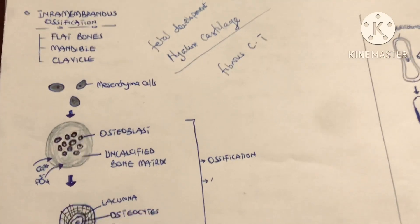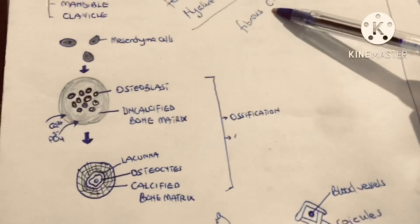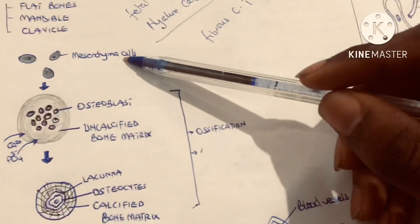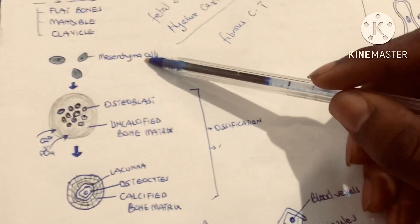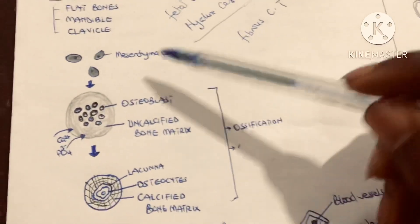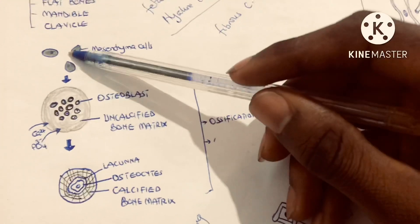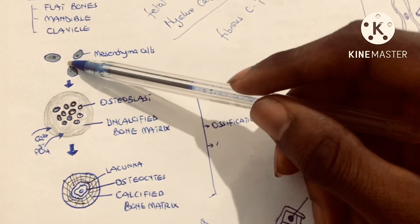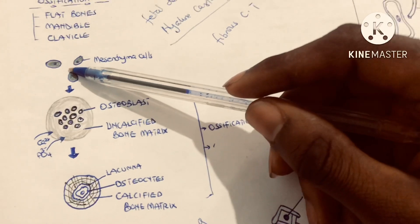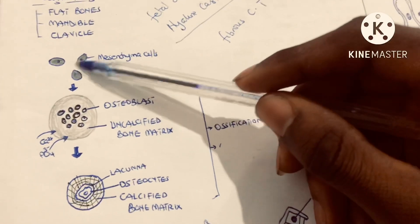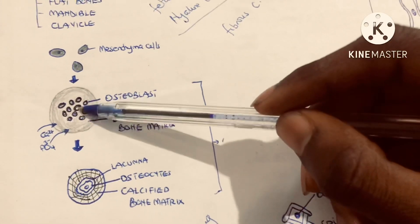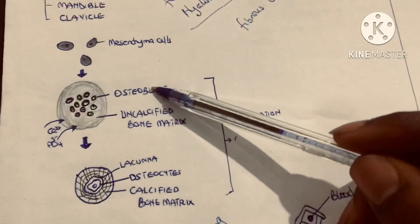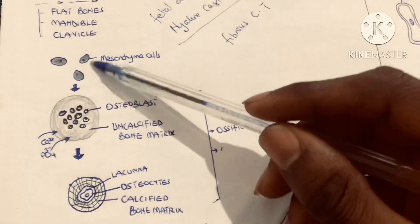In the fibrous connective tissue we have stem cells called mesenchymal stem cells. These stem cells will come together, aggregate, and after aggregation they will multiply through mitosis.